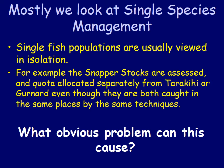For example, snapper stocks are assessed and quota allocated separately from tarakihi or gurnard, even though they're all caught in the same places by the same techniques — that would be inshore bottom trawls. Try to answer the question now: what obvious problem can this cause if you view a single fish population in isolation without taking into account the others?